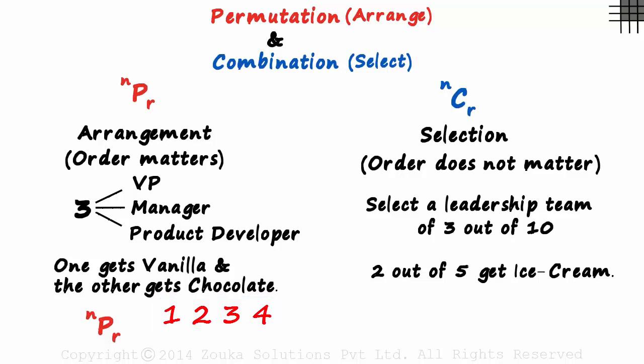For this formula, we cannot consider cases such as 111 or 232 or 441. The digits are repeated in each case. So the objects have to be distinct and there can be no repetition.